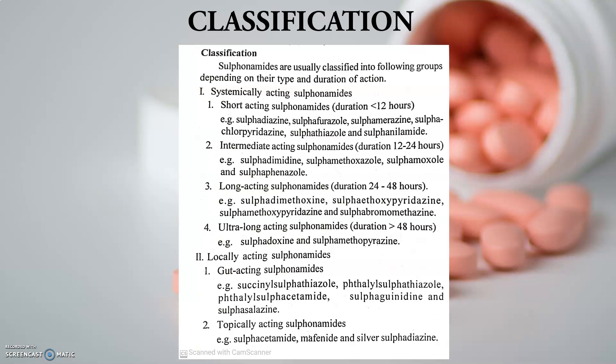The gut acting sulfonamides include sulfaguanidine and sulfasalazine. Sulfasalazine is a very important drug and has a very important role in inflammatory bowel symptoms. The topically acting sulfonamides include sulfacetamide, which is mostly used in the eye, and silver sulfadiazine, which is used in burns and similar conditions to prevent bacterial infection.